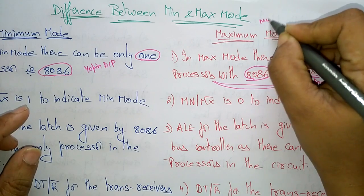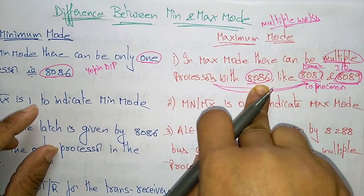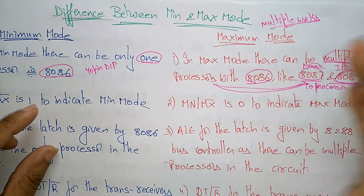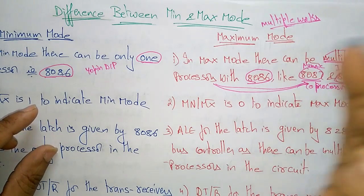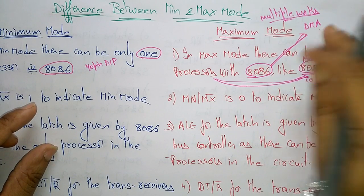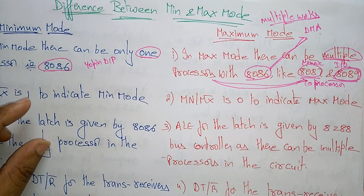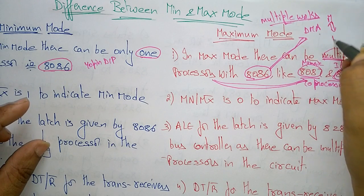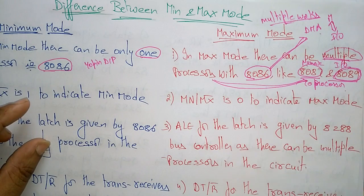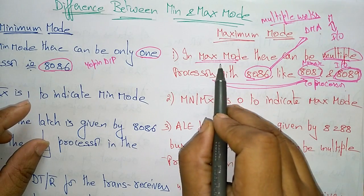When multiple tasks need to be done simultaneously, it becomes a heavy burden for the 8086 to handle everything at once. So it divides the work by handing over the system bus to different processors for operations like DMA — Direct Memory Access. The DMA controller directly transfers data between I/O devices and memory without CPU involvement. This is the concept of a multiprocessor system.